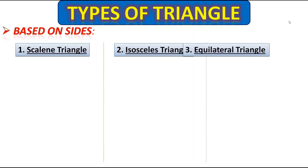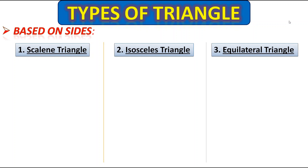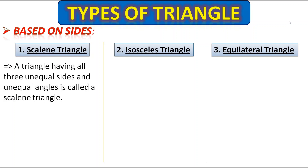There are three types of triangles based on sides. Those are scalene triangle, isosceles triangle, and equilateral triangle. Let's see one by one. The first one is the scalene triangle. A triangle having all three unequal sides and unequal angles is called a scalene triangle.